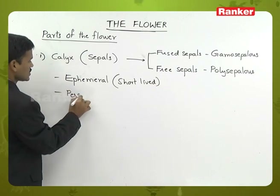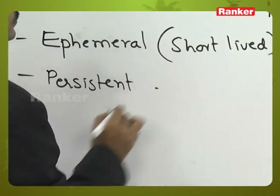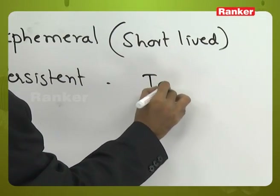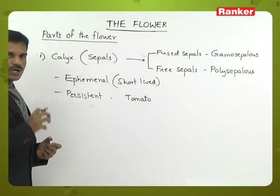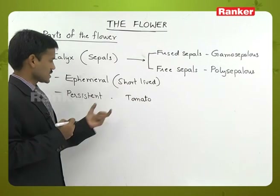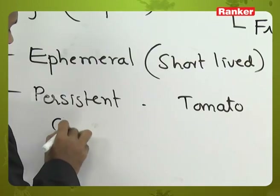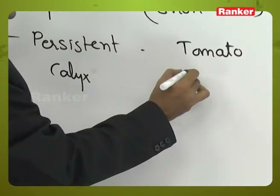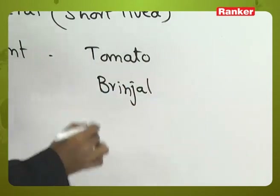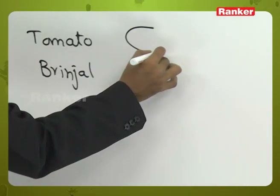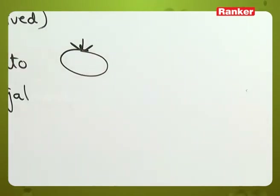Persistent calyx is observed in tomato. In the tomato fruit, we can also observe the green-coloured sepals. So that is persistent calyx — it is observed in tomato and brinjal. In tomato, the sepals remain attached to the fruit.